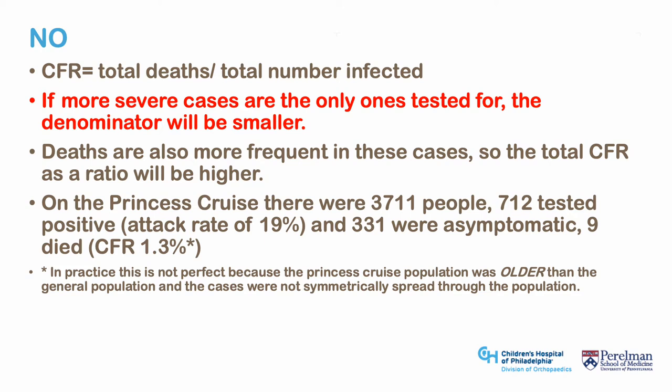The case fatality rate, or CFR, is total deaths over total number diagnosed, while total deaths over total infected is infection fatality rate. If only more severe cases are tested, the denominator will be smaller, and deaths are more frequent in these cases, so CFR will be higher. On the Princess Cruise, there were 3,711 subjects; everyone was tested. 712 tested positive, giving an attack rate of 19 percent. 331 were asymptomatic. 9 died, giving a case fatality rate of 1.3 percent. Even this sample with perfect testing has selection bias because the population was on average older.